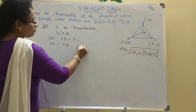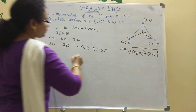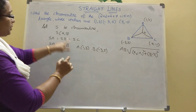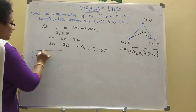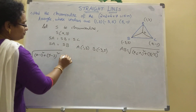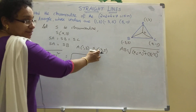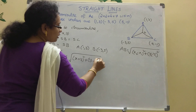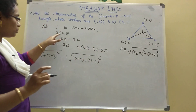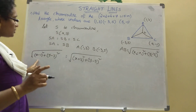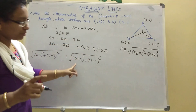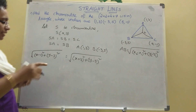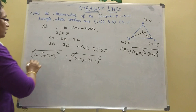For SA = SB, I am writing: square root of (x - 1)² + (y - 3)² = square root of (x + 3)² + (y - 5)². Since both sides have a square root, we cancel them. Now splitting using (a - b)² = a² + b² - 2ab.